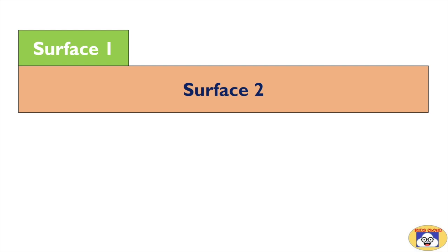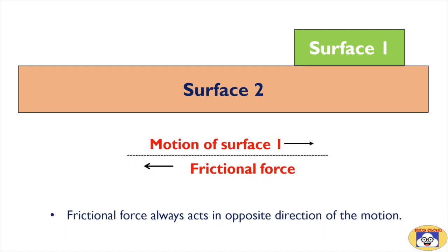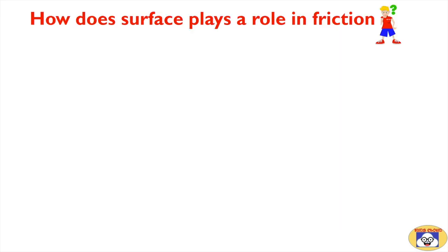Here are two different surfaces that appear to be smooth. Let's make surface one slide over surface two. It slides over a certain distance and then gradually stops. Why does it stop? Yes, it's because of friction. Frictional force always acts in the opposite direction of the motion. If the motion of surface one is from left to right, then frictional force acts from right to left, and vice versa.